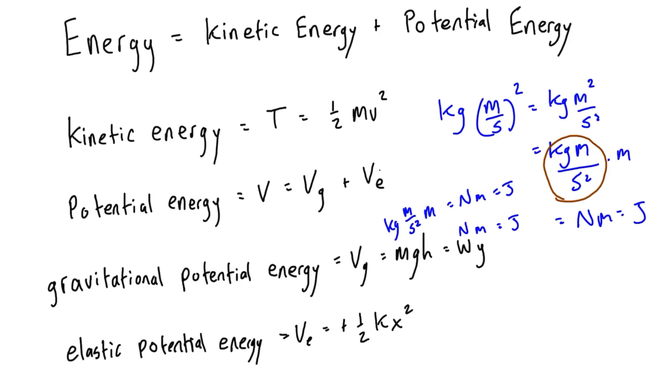And then for the rest we have this letter k that's the spring constant, and x which is the distance that we've basically stretched or compressed the spring. The units here are going to be newtons per meter for k, and x is in meters. So we have meters squared, one of those is going to cancel out, and we're left with newton meters which is joules.